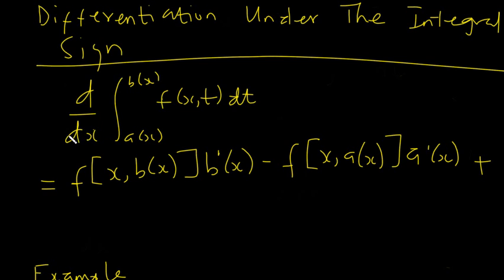You cannot just cancel the derivative and the integral. Leibniz came up with this rule, and it works. Under the integral sign you are integrating with respect to T, and X is treated as constant, so if anything is supposed to change in the function of X and T, it is T that should be changing.